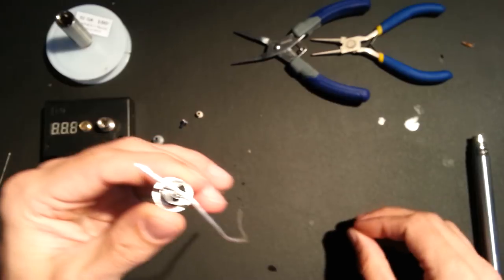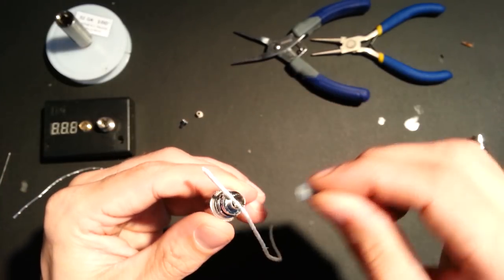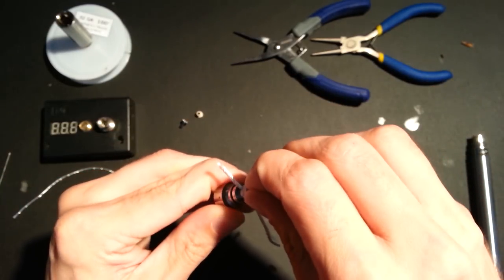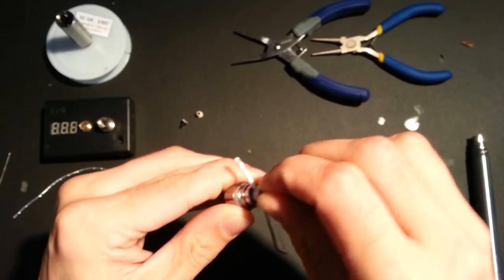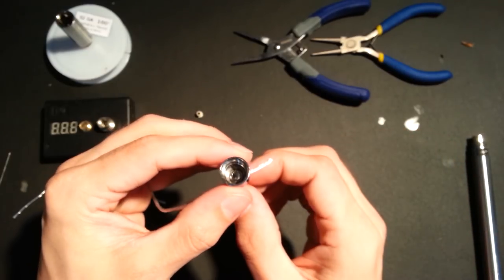So now we can insert this into our coil head like so. What I like to do is I like to stuff that stem right back in the top just for the meantime. So as to kind of hold that wick in place.